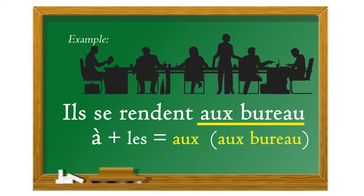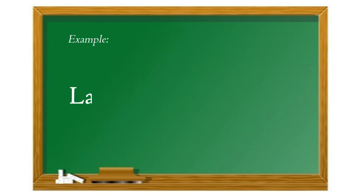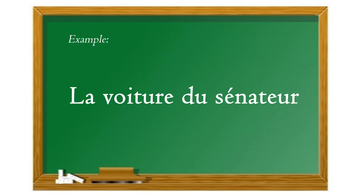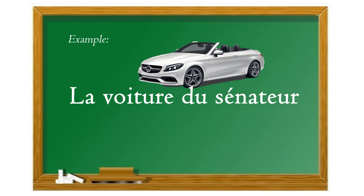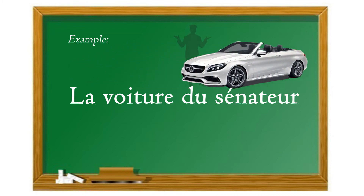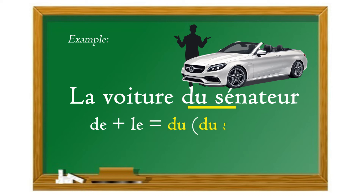Un autre exemple : « la voiture du sénateur ». On devrait dire « la voiture de le sénateur », mais ça ne se dit pas. Alors « de » plus « le » article nous donne « du » — du sénateur.